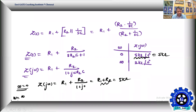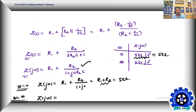Now set omega equal to infinity. Using the initial value theorem analogy — just as s→∞ — divide numerator and denominator by omega. The expression Z(jω) becomes R1 plus R2/ω divided by (1/ω + j·R2·C).